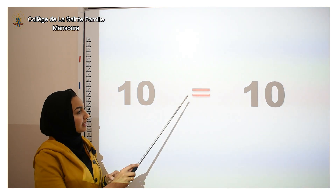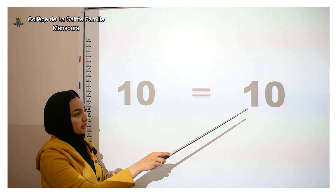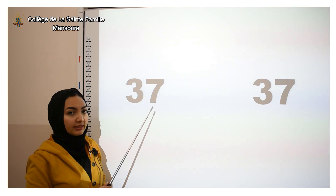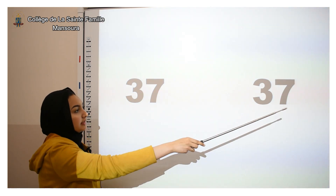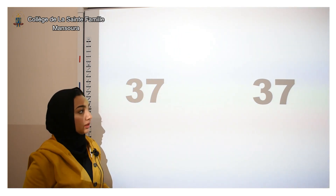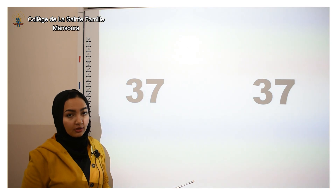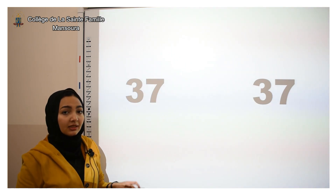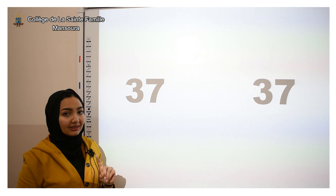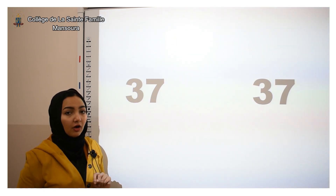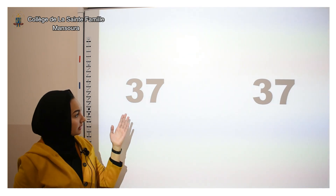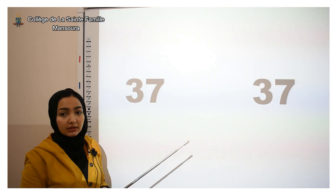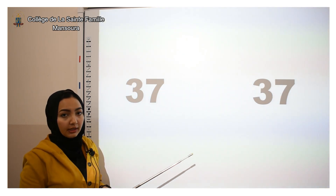Another example: thirty-seven and thirty-seven. Which one has more and which one is less? There is no one that has more because they are the same — this is thirty-seven and this is thirty-seven, so they are equal.